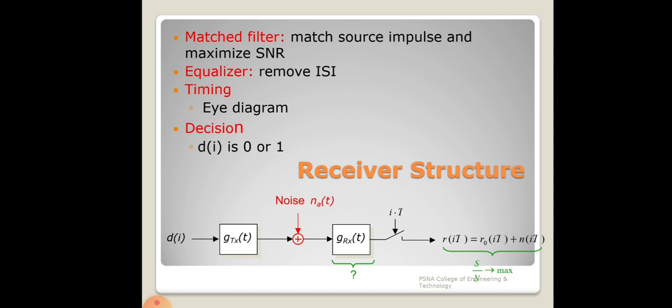ISI cannot be avoided, but we can assume the transmit and receive filters on both sides of the channel act as matched pairs, so the effect of the channel is countered by means of an equalizer. The role of the transmit filter is important to fit the transmitted spectrum into the appropriate spectral mask.